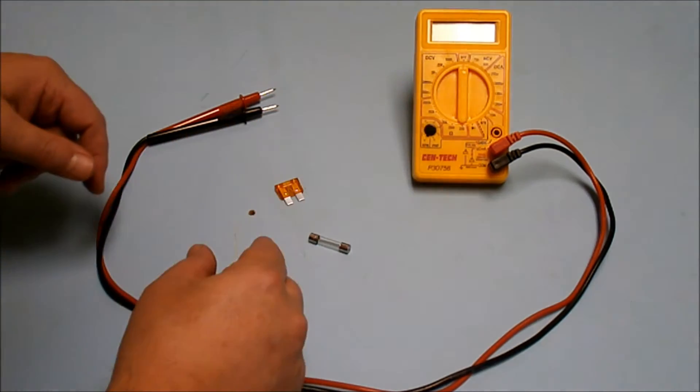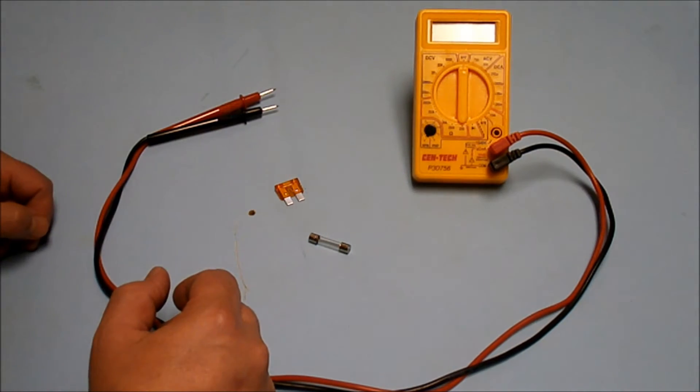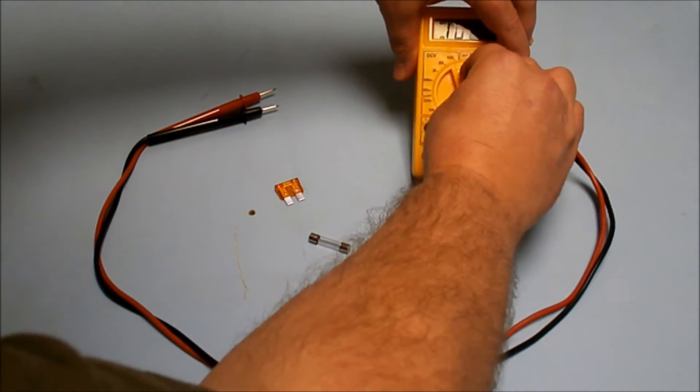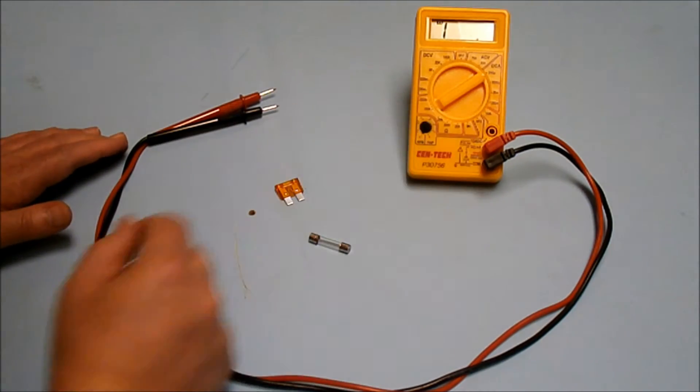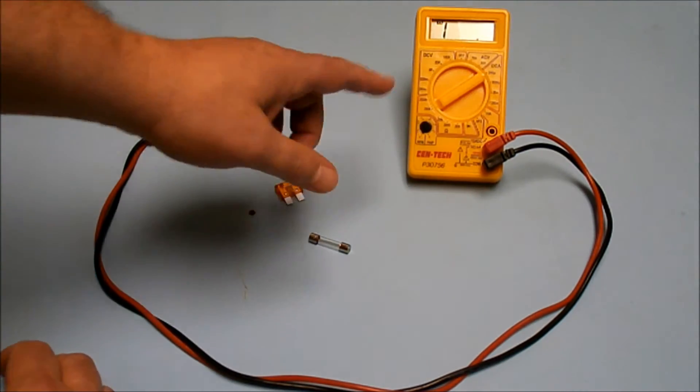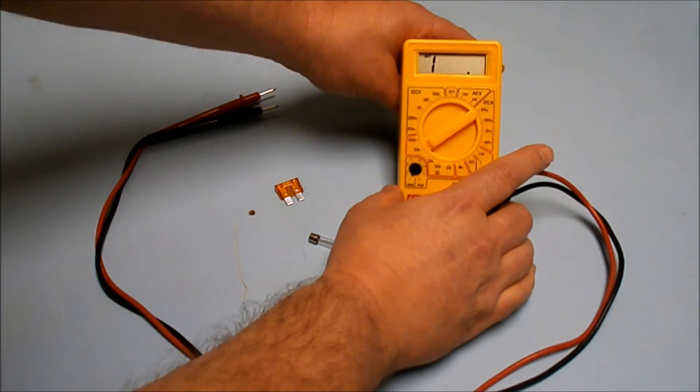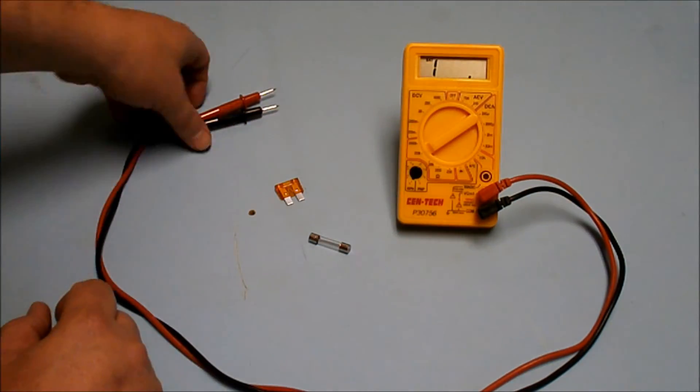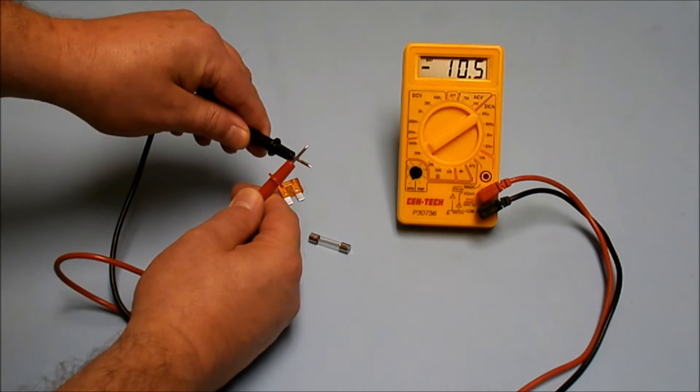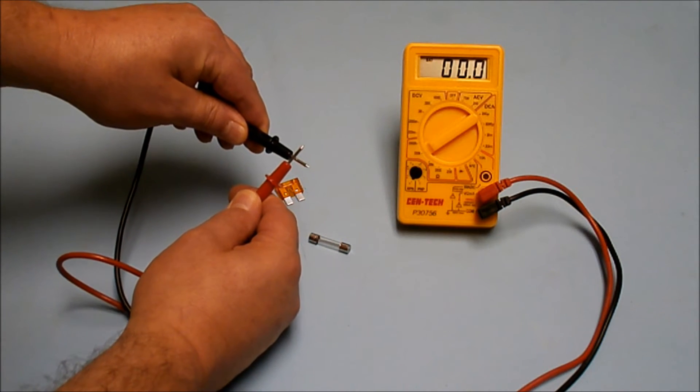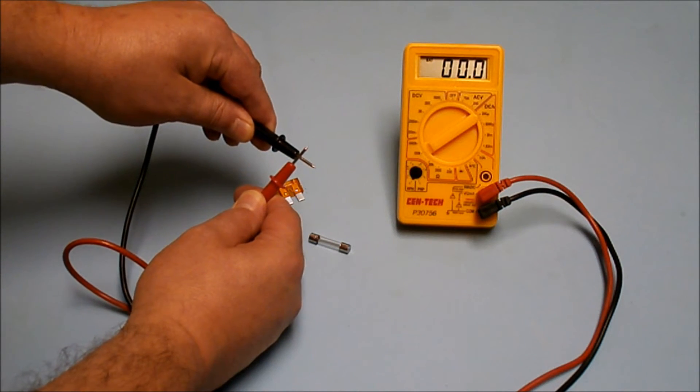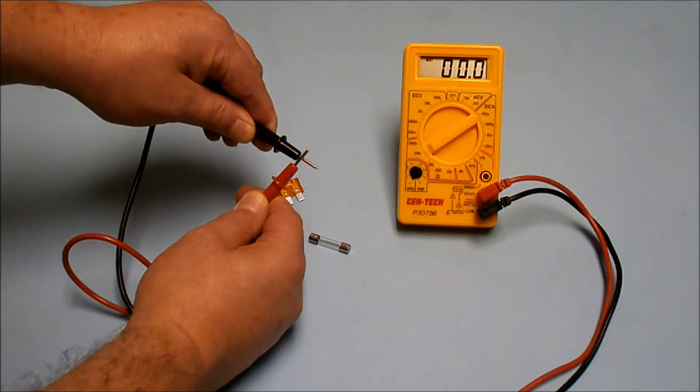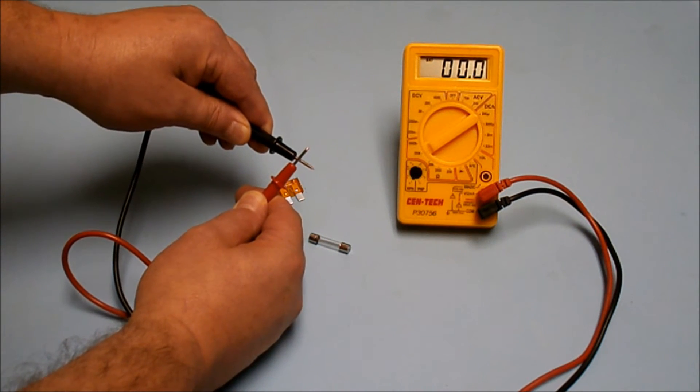You're going to take your multimeter and you're going to put it to ohms because ohms is how you test continuity on a multimeter. I like to set it to 200k ohms. The I on the multimeter stands for infinity, which means infinite resistance. When you touch the two multimeter leads together, you're going to get zero, which means zero resistance. Electricity is flowing through without any resistance at all.